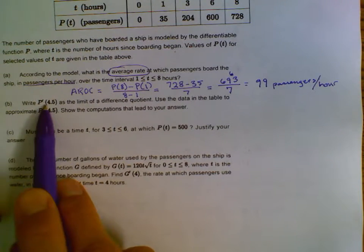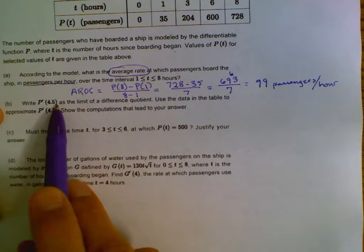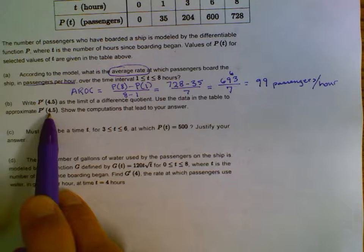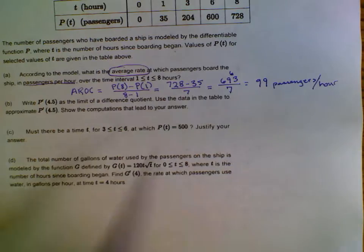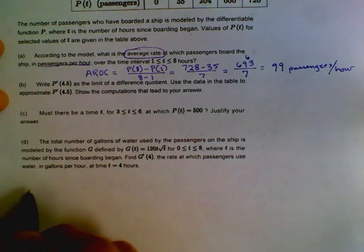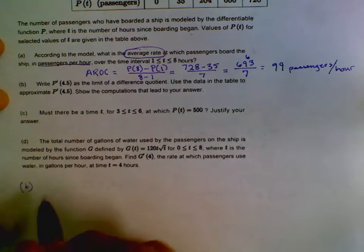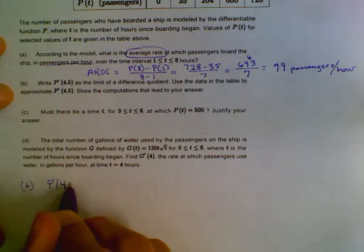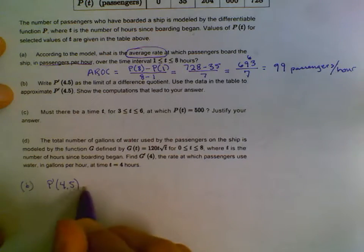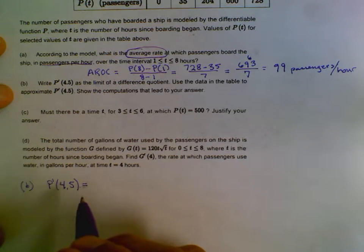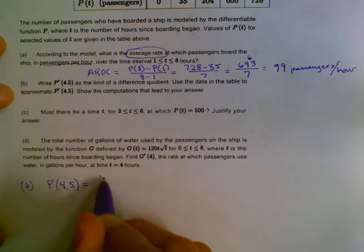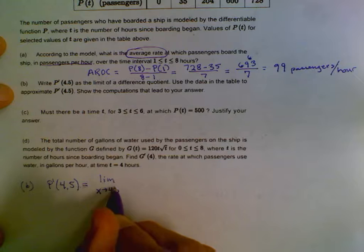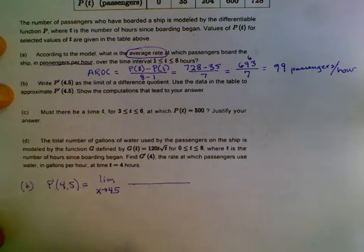Okay, so now this says write P prime at 4.5 as the limit of the difference quotient. Well, use the data in the table to approximate P prime of 4.5 and show those computations. So since this is so involved, I'm going to write this separately down here at the bottom. Part B says I need to write P prime of 4.5 as the limit of the difference quotient. So if we're going to do the limit of a difference quotient, it would be the limit as x approaches 4.5. I'm using the alternative definition of a derivative.